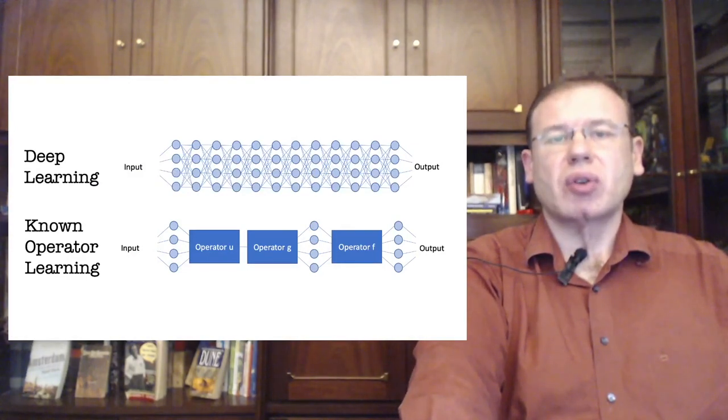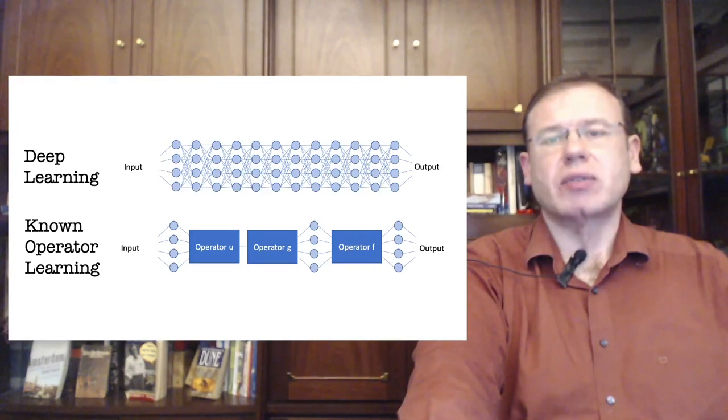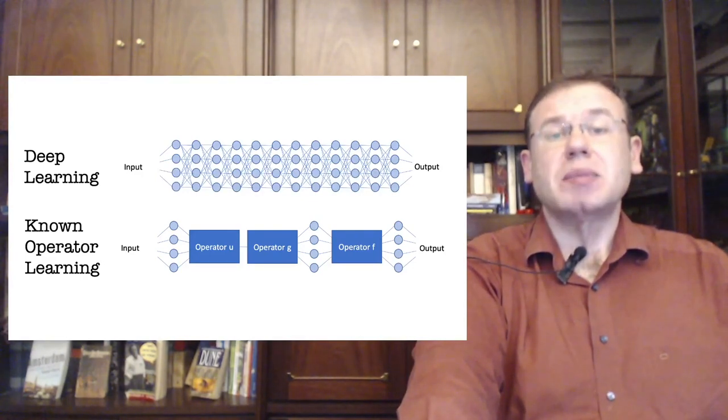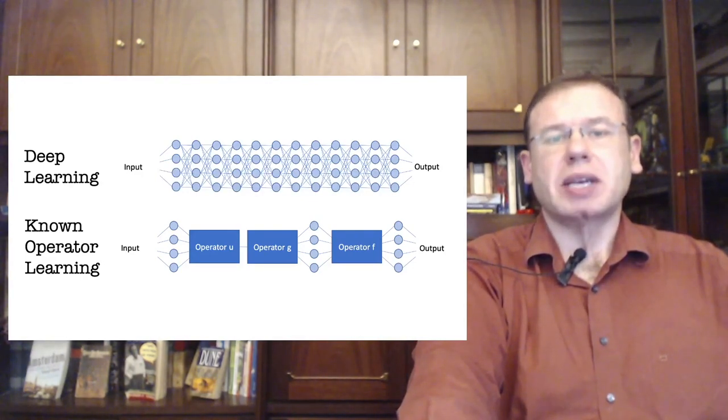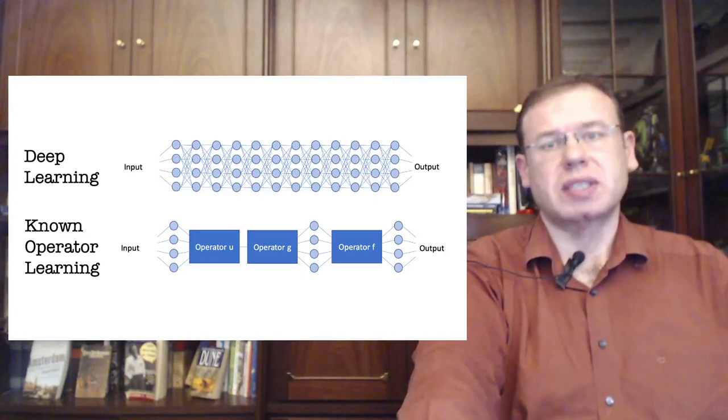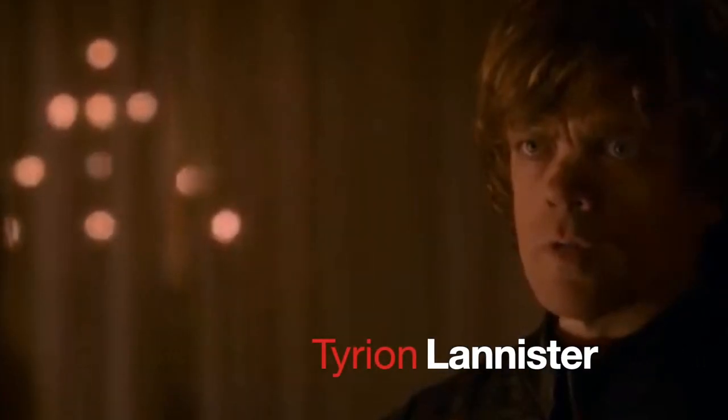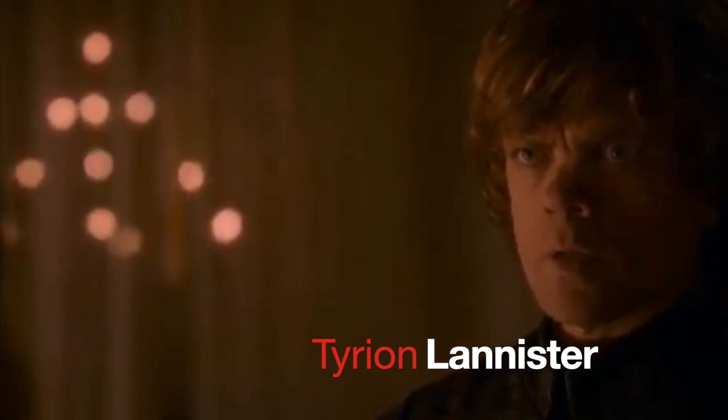The main idea of known operator learning is that we do not want to learn things that we already know. This may seem intuitive but typically triggers machine learning experts. I will hurt you for this. A day will come when you think you're safe and happy and your joy will turn to ashes in your mouth.